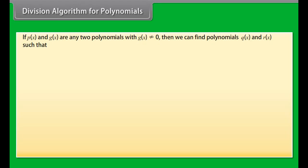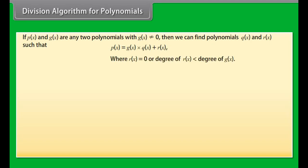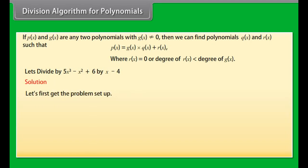For example, if α, β, γ are the zeros of 4x³ + 2x² + 3x + 1, then α + β + γ = −2/4, αβ + βγ + αγ = 3/4, and αβγ = −1/4.